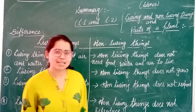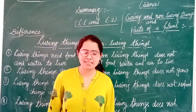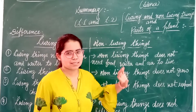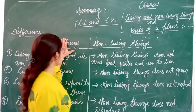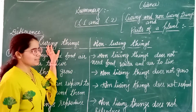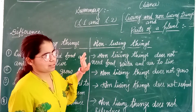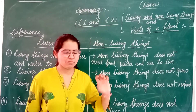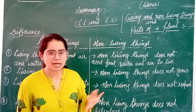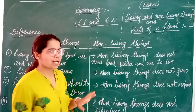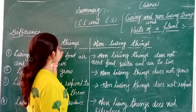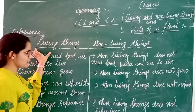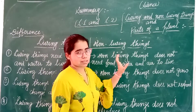Good morning students. I am your science teacher and today we are summarizing our lesson one. In science, lesson one is living things and non-living things. What are living things and non-living things? We are all surrounded by many things, and in the world, things are divided into two parts: living things and non-living things.